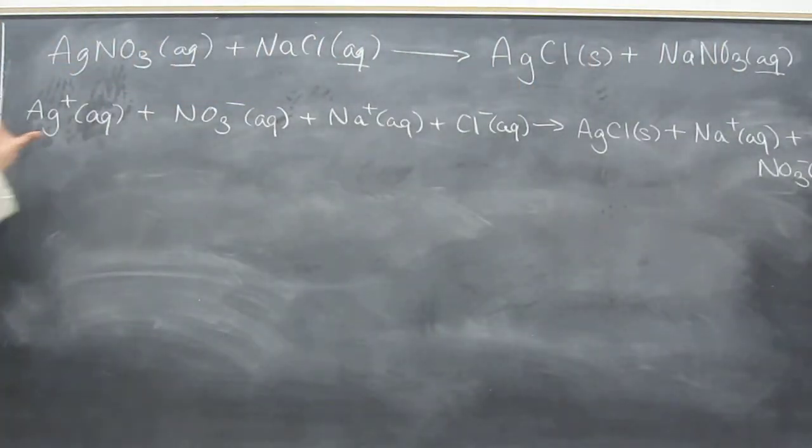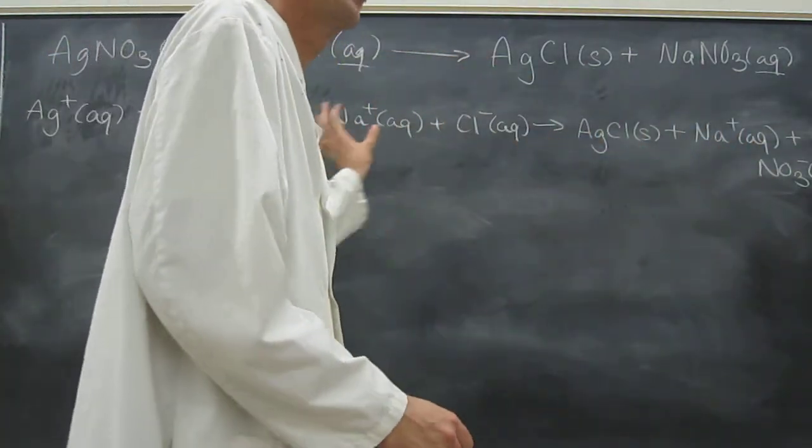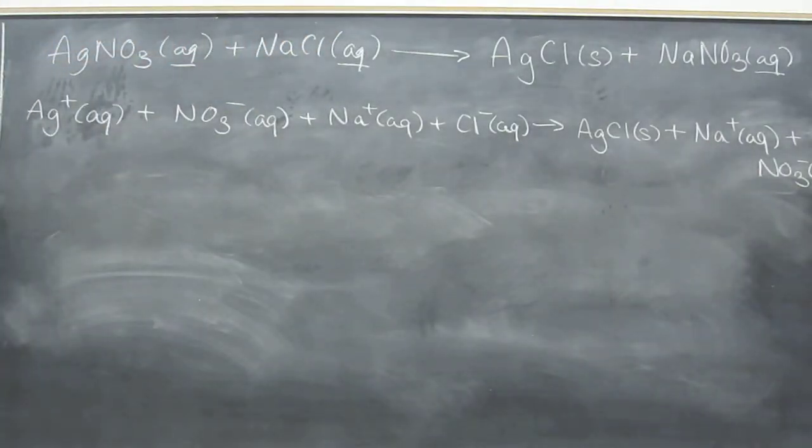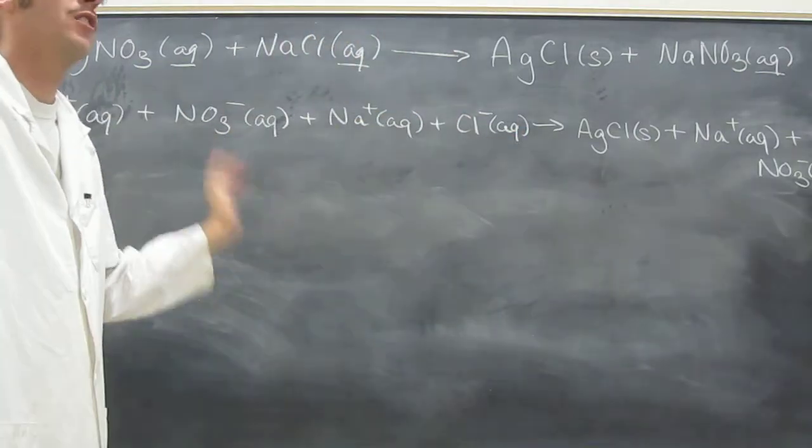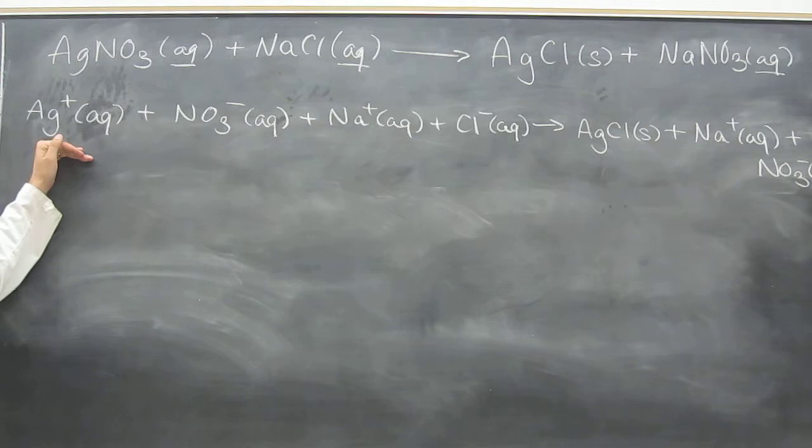So that's called the total ionic equation. That's all the ions, the total ions in solution. The net ionic equation is you take the things that are the same on both sides of the reaction and you cancel them out.